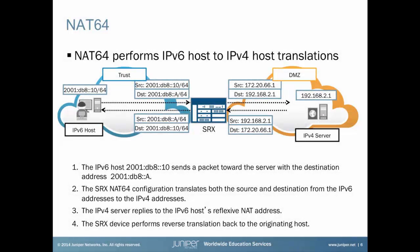NAT64 performs IPv6 host to IPv4 host translations. The IPv6 host on the left-hand side with IP address 2001:DB8::10 sends a packet to the server with the destination address 2001:DB8::A, which is actually just an IPv6 address in the same subnet that the SRX is configured to listen to using proxy NDP. The SRX NAT64 configuration then translates both the source and the destination from IPv6 addresses to the IPv4 addresses that we see on the right-hand side.